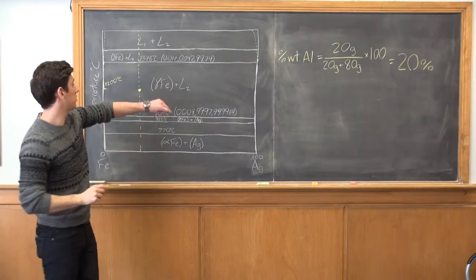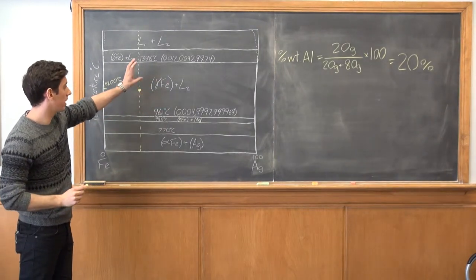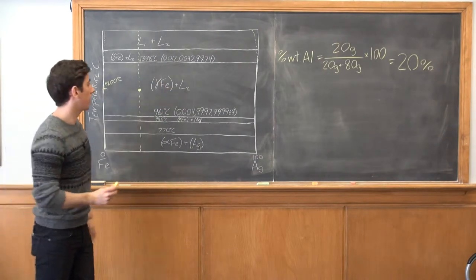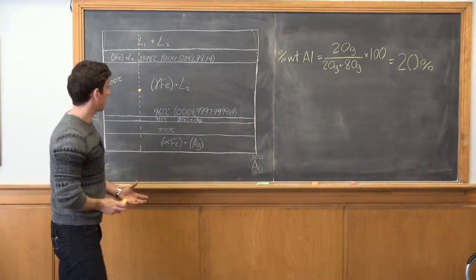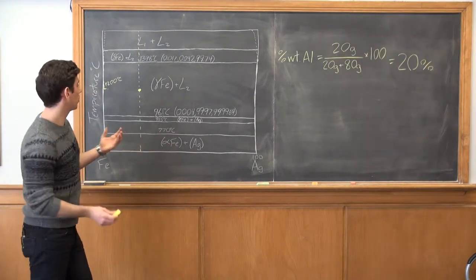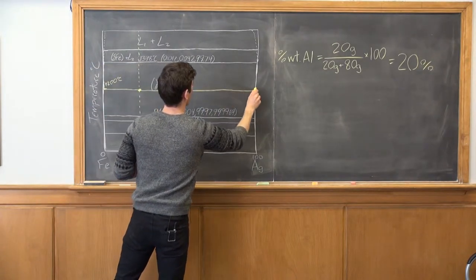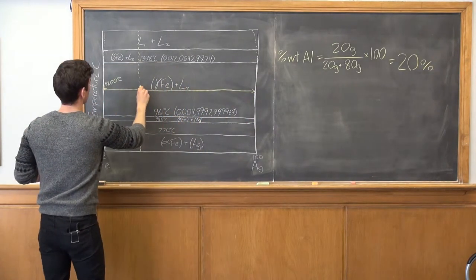So we look where that intersects with our line and this is our point right here. So we're in this region with this mixed gamma iron phase or a mixed phase with gamma iron and this liquid L2. So we're trying to determine the amount of L2 that we have. So we can draw a tie line here and just apply the lever rule.